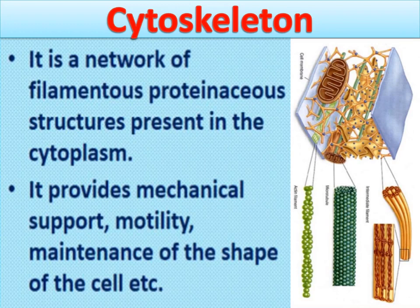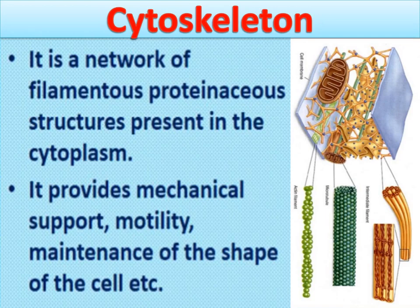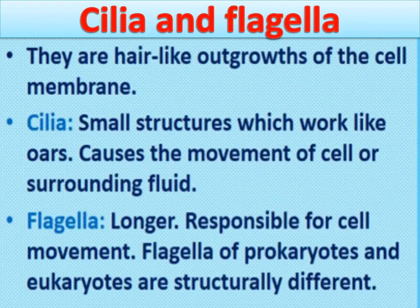The cytoskeleton provides mechanical support — just as the skeleton in our body provides support and enables movement. Cytoskeleton means the cell's skeleton. It is responsible for mechanical support, motility, and maintenance of the shape of the cell. Just as different types of bones are present in our body, different types of filaments in the cytoskeleton are present in the cell, responsible for providing support, motility, and maintaining cell shape.